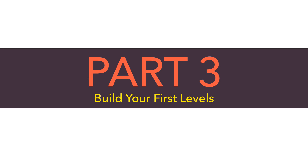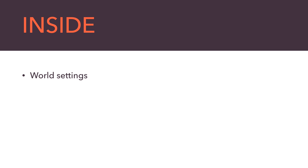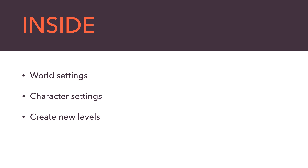In Part 3 we're going to learn about world settings and how they affect your game, then look at character settings which define the behavior of your character in that world. After that we'll get into building more levels for Glitch — we'll build one together, then I'll build more in a time-lapse, aiming for at least 10 levels by the end of this video.